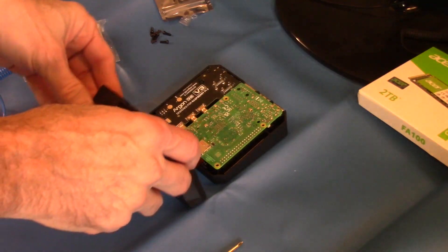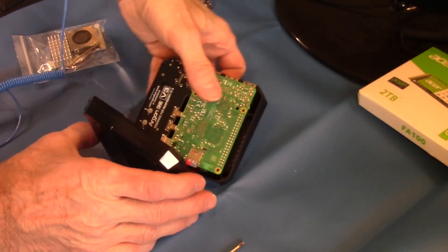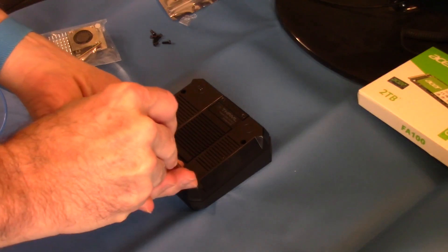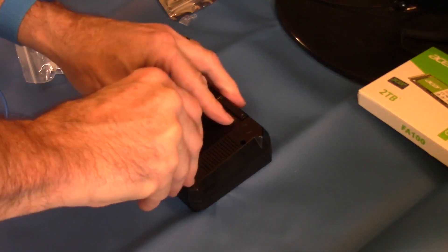Now put the bottom of the case on, being sure not to pinch the PCIe cable. Then put the four screws in to secure the bottom to the top of the case.